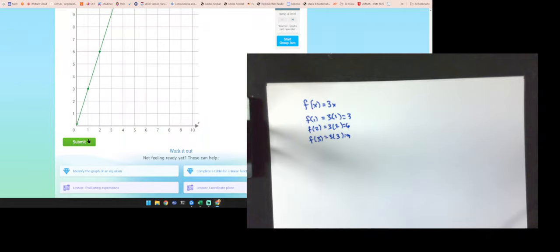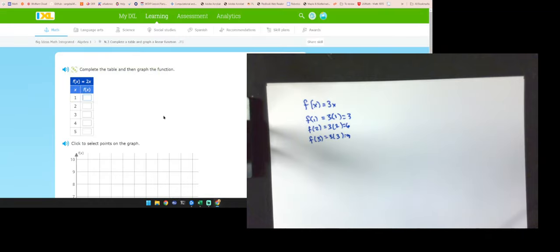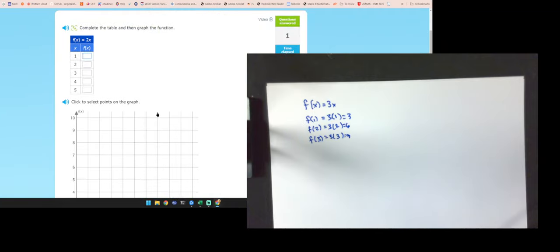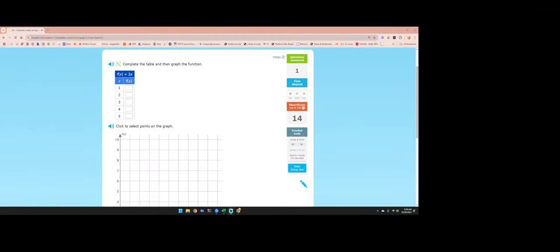So those are the three numbers that go in: three, six, nine. Now it says click to select the points on the graph. So x is one, three; two, six. Only have to get two points to get a line. Notice that I'm going to get a three is a nine. I'm going to go ahead and click submit, and I got it right. Okay, you don't necessarily need to do these on paper if they're the simple multiplication problems. So let's look at the second one. This says f of 2x. That means just take this x and multiply it by two. I'm going to get two, four, six, eight, ten.